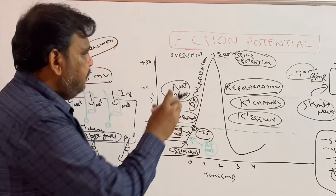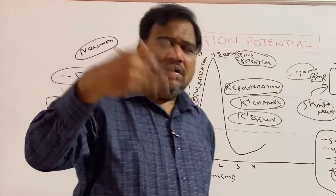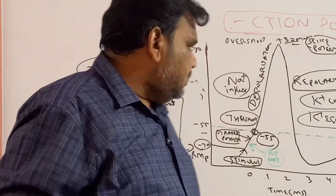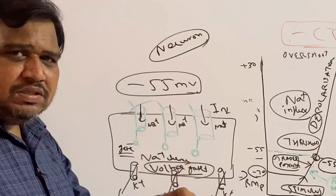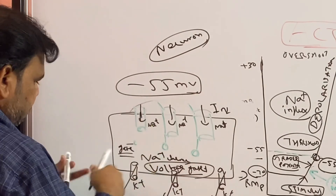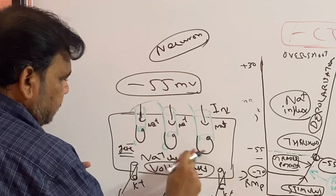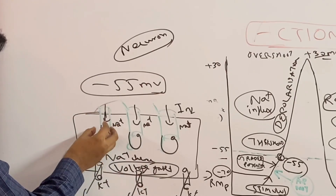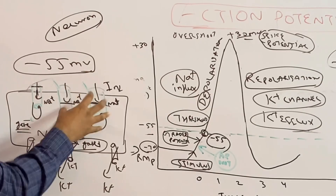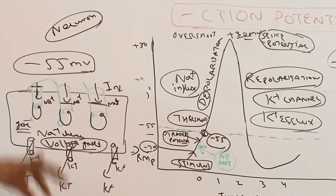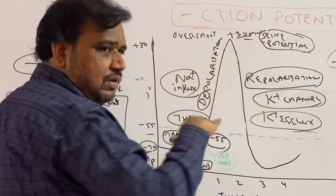Very important: at plus 30 millivolts, why are no more sodium channels opening? Why is further positive charge not coming in? Because these are voltage-gated. Once plus 30 is reached, the activation gate is inactivated — the inactivation gate is closed. So sodium cannot come in because the gate is closed. At the same time, potassium channels are open and potassium efflux occurs.